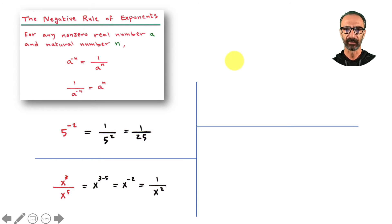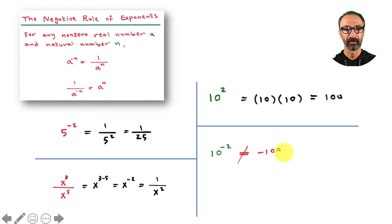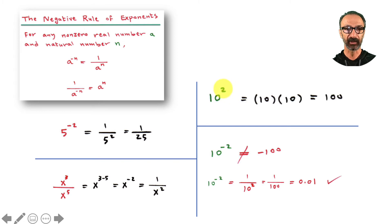Negative exponents are important because we're going to talk about scientific notation. Everyone knows 10 to the second means 10 times 10 which is 100. But 10 to the negative 2 is not negative 100 — it's one over 10 squared, applying the negative exponent rule, which is one over 100, or 0.01. So positive exponents mean big numbers, and negative exponents mean very small numbers.